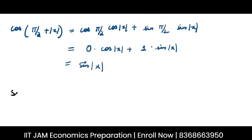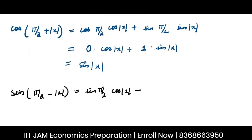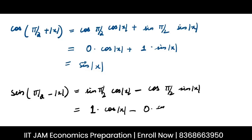Now let me work on sin(π/2 − |x|). Using sin(A − B) = sin A cos B − cos A sin B, we get sin(90°)·cos|x| − cos(90°)·sin|x|. Since sin 90° = 1 and cos 90° = 0, this simplifies to cos|x|.